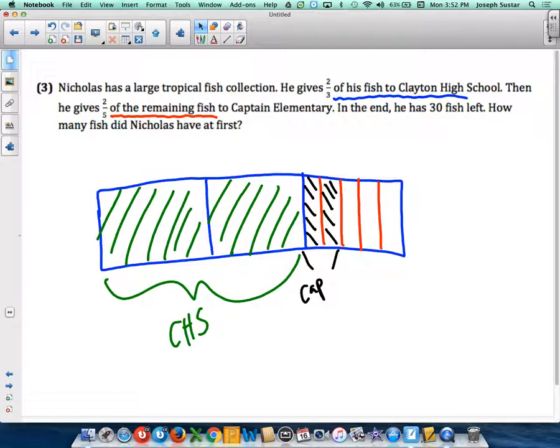In the end he has 30 fish left. So these remaining bars here represent 30 fish. We have 30 fish represented by three bars. If we do 30 divided by three, we know that each bar has to be 10 fish.